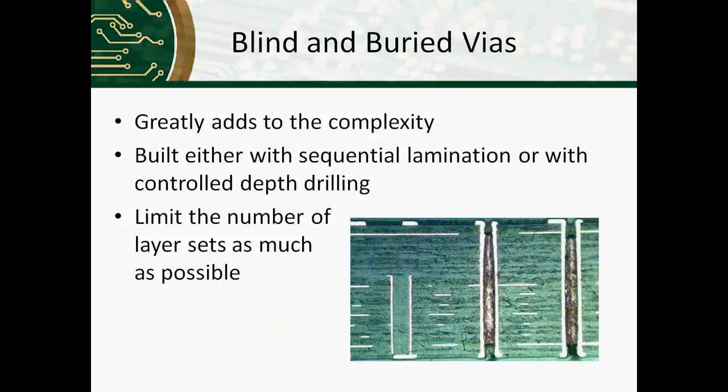The last consideration on how boards are constructed is if there's blind and buried vias. This greatly adds to the complexity of the manufacturing process and can practically double the amount of process steps for the inner layers. These can either be built with sequential lamination or with controlled depth drilling. Sequential lamination is where you build parts of the board separately, so if you've got blind between one and six on a twelve layer board, you would build one through six together, drill that, and then put the rest of the board on it, and then drill the final one. So you will practically double the amount of process steps for an inner layer.